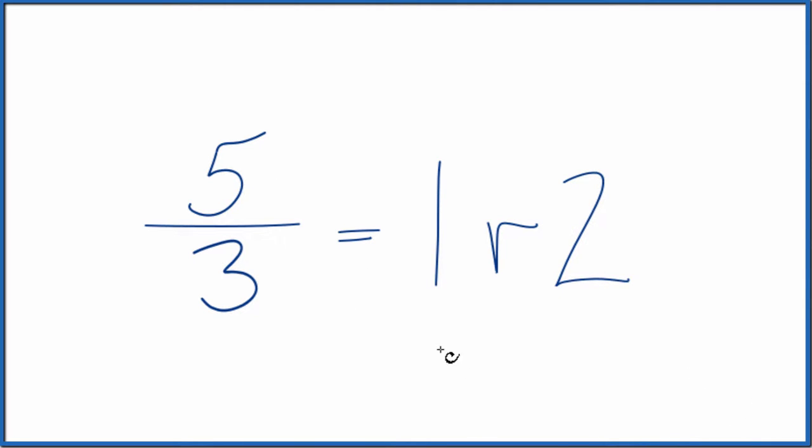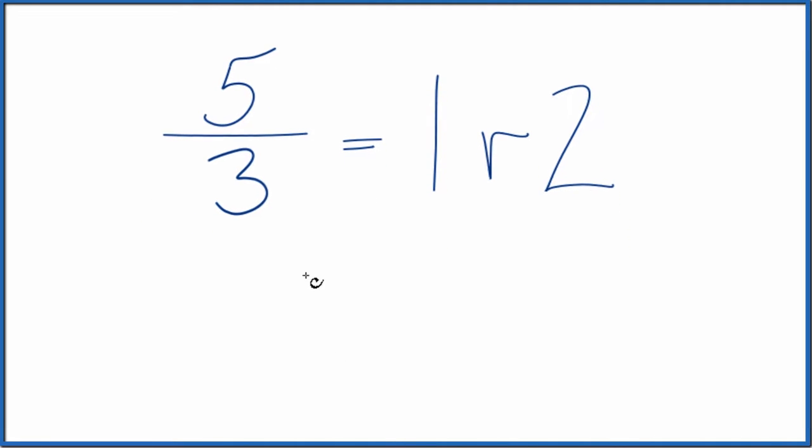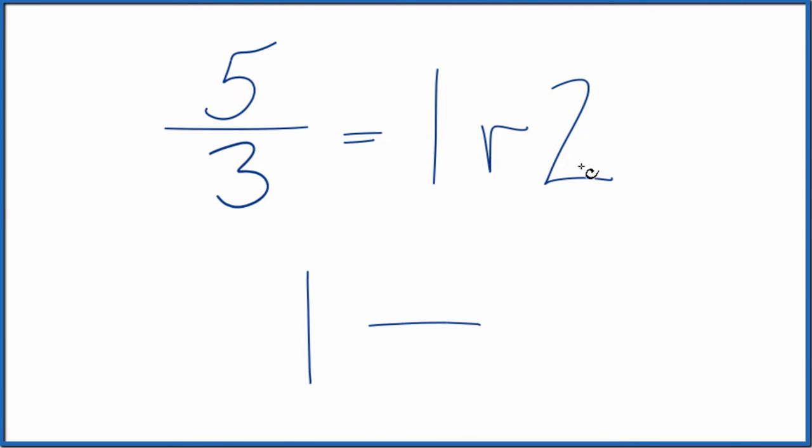Now to get our mixed number, we take the 1 and we put the remainder here as the numerator. Take our denominator from the original fraction, and 5 thirds is equal to the mixed number 1 and 2 thirds.